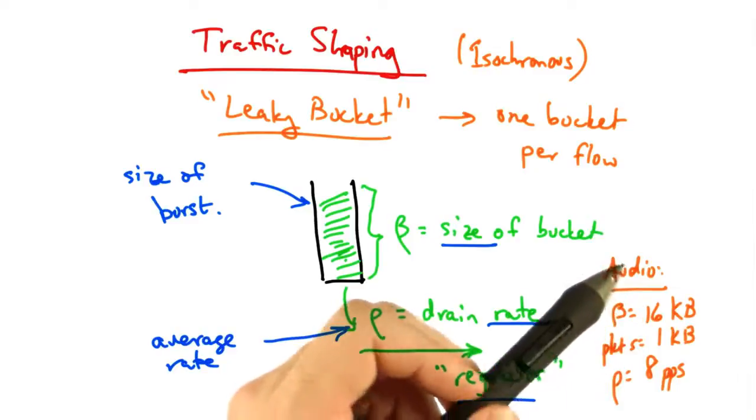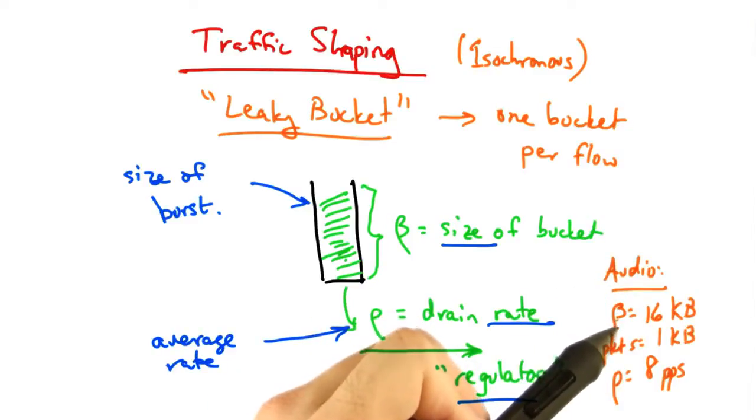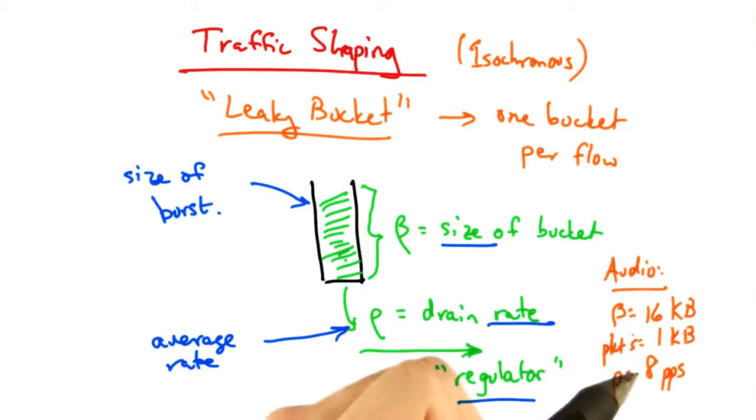For example, for an audio application, one might consider setting the size of the bucket to be 16 kilobytes, so packets of 1 kilobyte would then be able to accumulate a burst of up to 16 packets in the bucket.